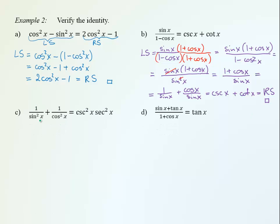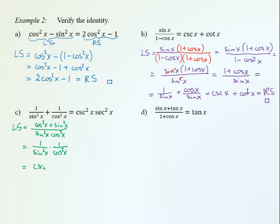In the next example we have two fractions being added. The left side, combined over the common denominator sin²x · cos²x, gives (cos²x + sin²x)/(sin²x · cos²x). Since sin²x + cos²x = 1, this becomes 1/(sin²x · cos²x), which separates into (1/sin²x)(1/cos²x) — that is, csc²x · sec²x — the right-hand side proven.